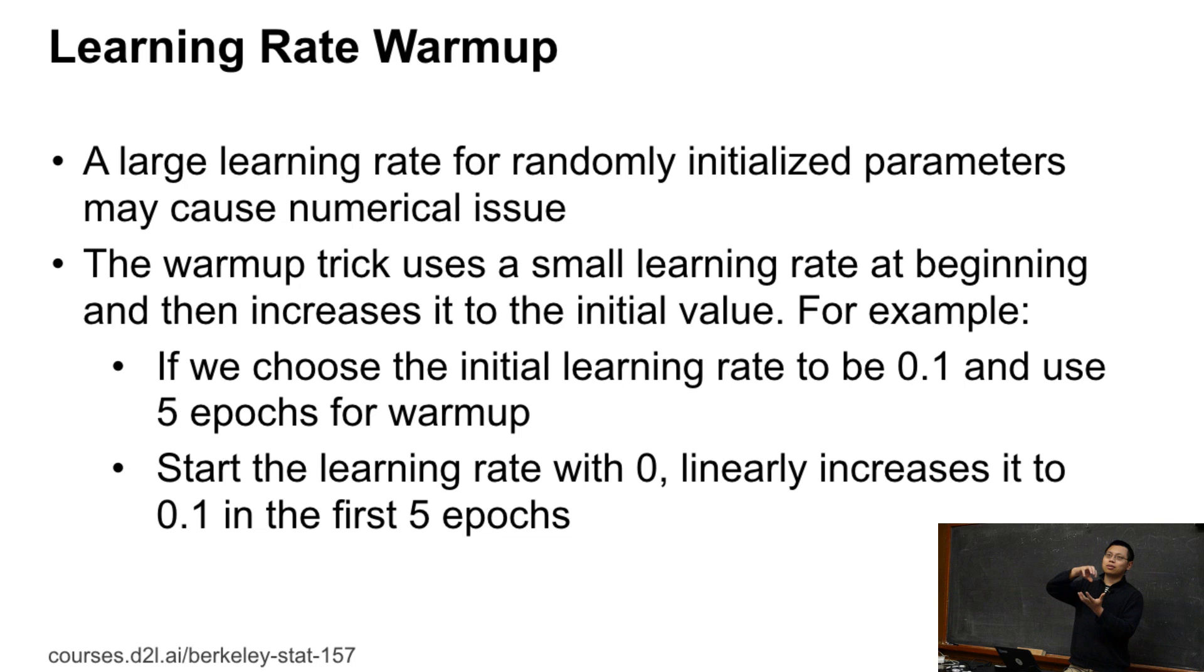So in this case, we cannot use a large learning rate, but we want to use a large learning rate to foster convergence. So what we can do here is called warm-up. What do we do here, we pick up a small learning rate at the beginning and gradually increase to the original learning rate that we have. For example, assuming we will use 0.1 as the initial learning rate, but that's too large at the beginning. We use the first five epochs for warm-up.